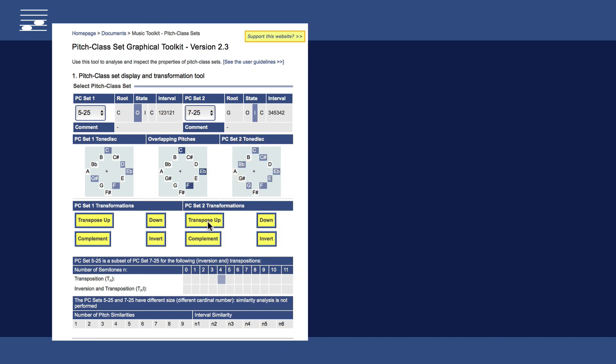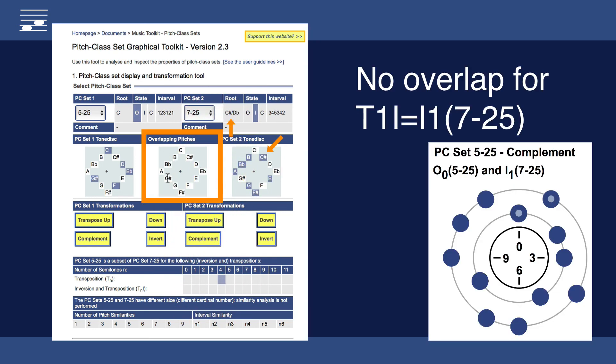Inverting the larger set 7-25 then transposing, we find a unique case of zero overlap when the root is C sharp.